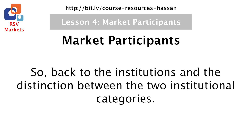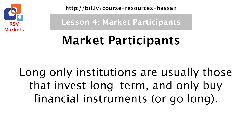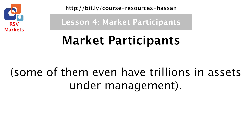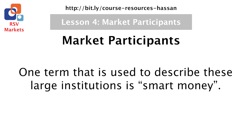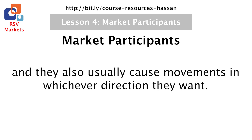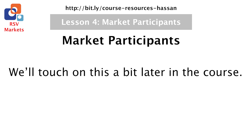Back to the institutions and the distinction between the two institutional categories. Long only institutions are usually those that invest long term and only buy financial instruments or go long. These are normally the largest participants in the markets and they usually participate with hundreds of billions of dollars, some of them even have trillions in assets under management. One term used to describe these large institutions is smart money. The reason they're called this is due to the fact that they are usually the main gainers in the markets, they do not get distracted, they are usually the first movers, and they also usually cause movements in whichever direction they want.